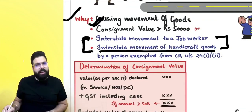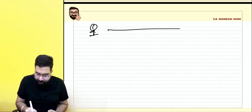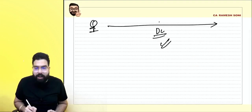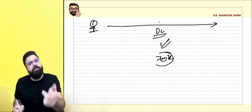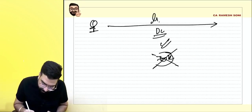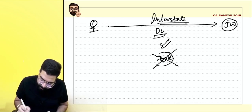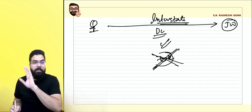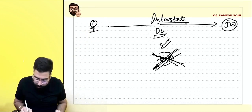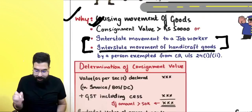When determining consignment value for goods sent for job work via delivery challan — if it is interstate movement to job work, you do not check the amount at all. Even if the delivery challan shows ₹70,000, the key factor is interstate movement to job work, making e-way bill compulsory regardless of value.